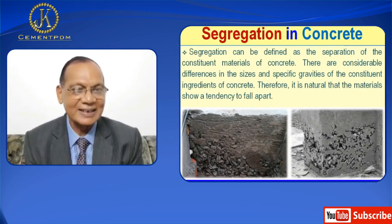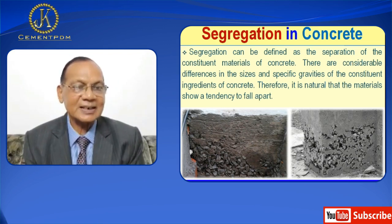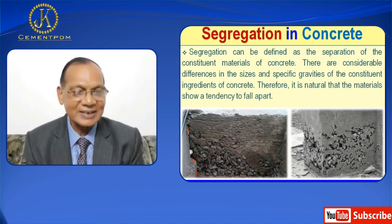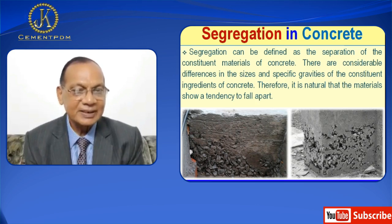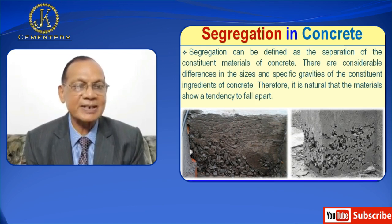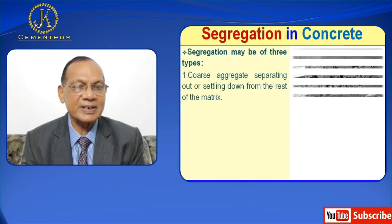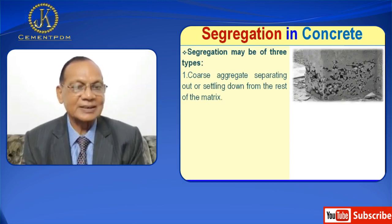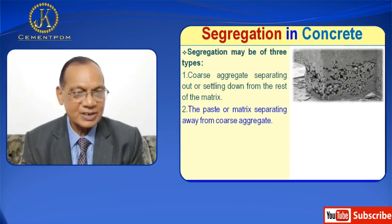Segregation can be defined as the separation of the constituent materials of concrete. There are considerable differences in the sizes and specific gravities of the constituent ingredients of concrete. Therefore, it is natural that the material shows a tendency to fall apart. Segregation may be of three types: number one is coarse aggregate separating out or settling down from the rest of the matrix; second is the paste or matrix separating away from the coarse aggregate; and third is water separating out from the rest of the material, being a material of low specific gravity.